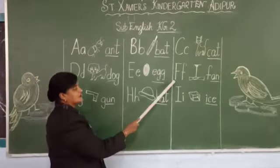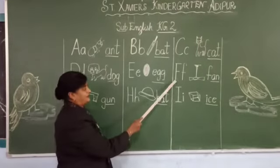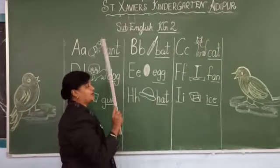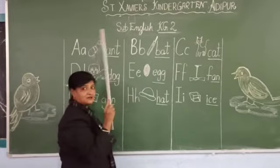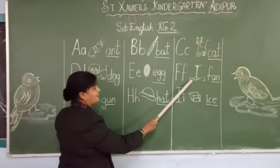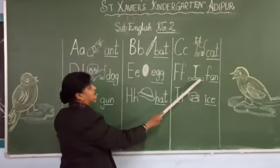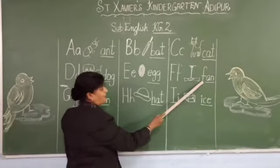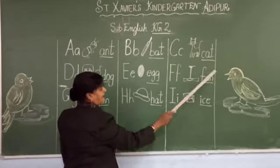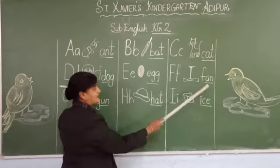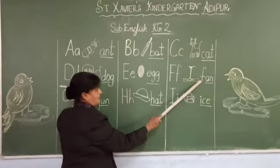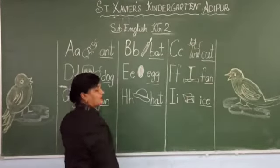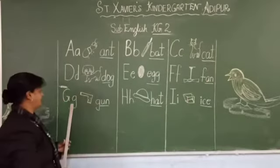After E comes F. F is for fan. Fan. Spell fan: F, A, N. Fan. Right.